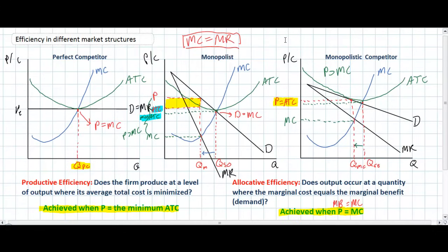If all industries were perfectly competitive, there would be no variety for consumers — everyone would wear the same clothes, drive the same cars, even have the same haircuts. Imperfect competition, while technically productively and allocatively inefficient, actually provides many benefits for consumers in the form of innovation, product variety, customer service, and other benefits derived from the competitive nature of monopolistic competitors. That wraps up this lesson on efficiency in different market structures.